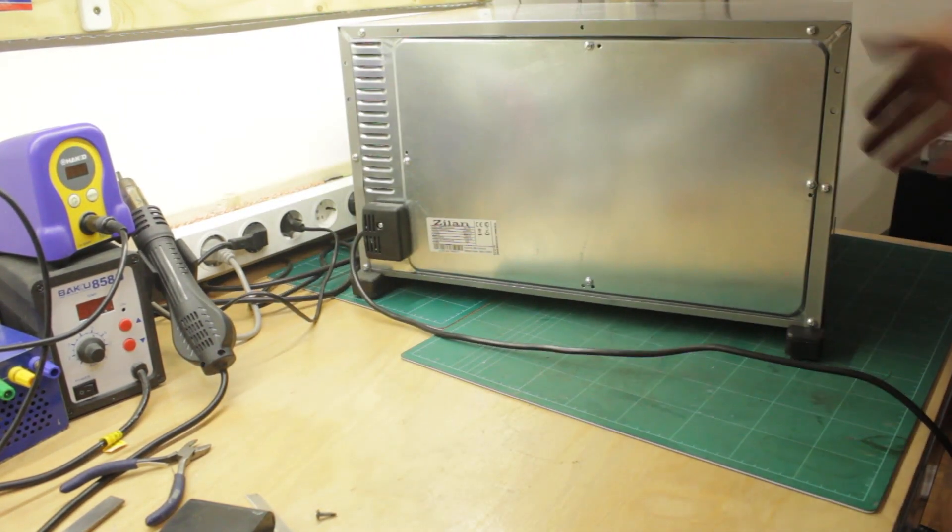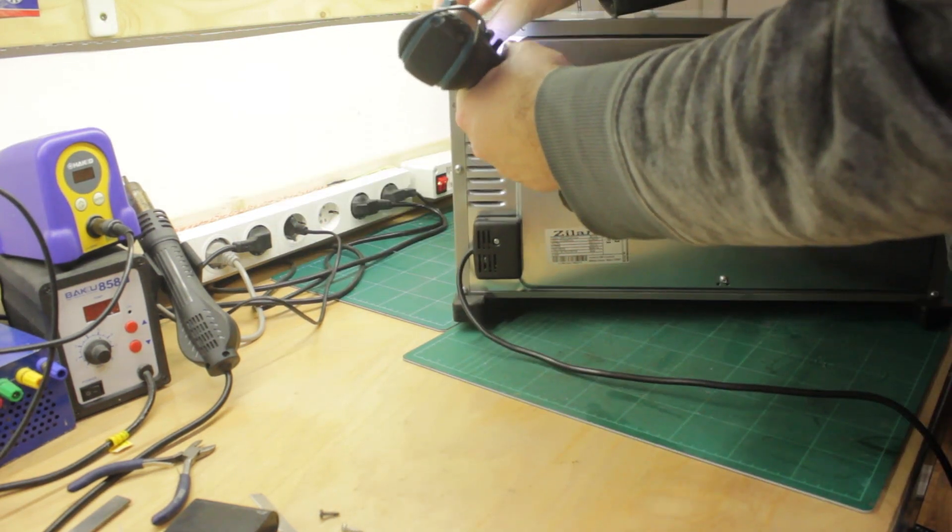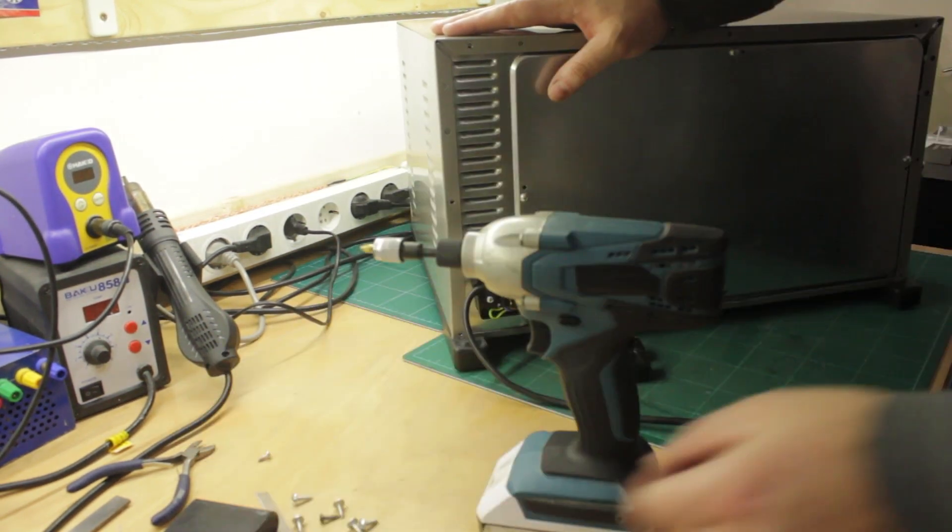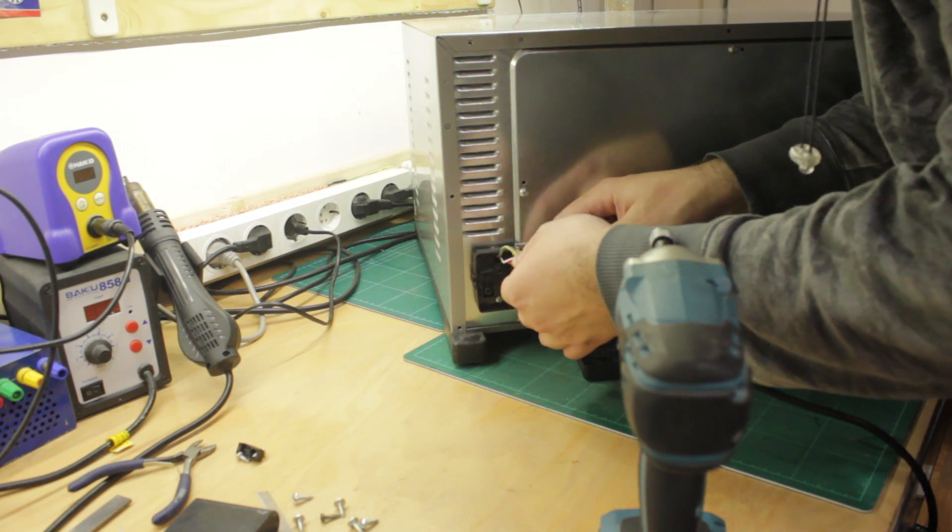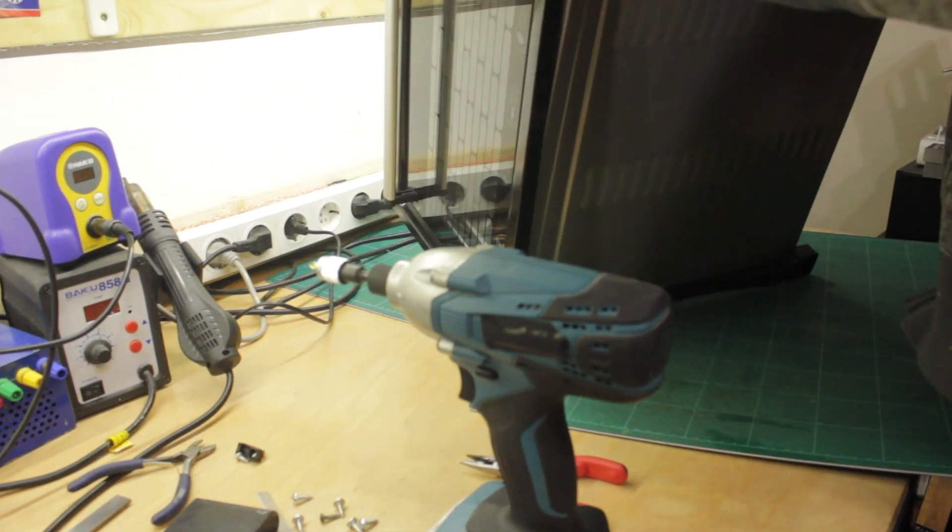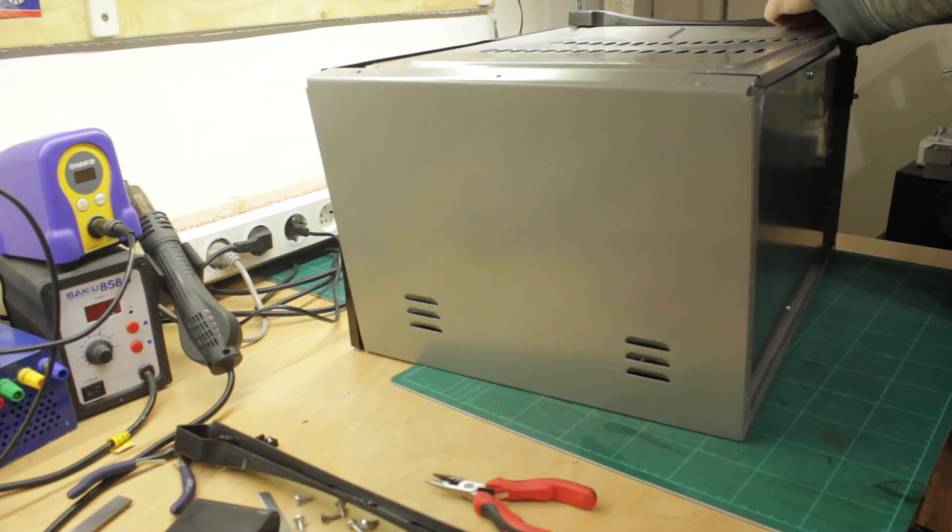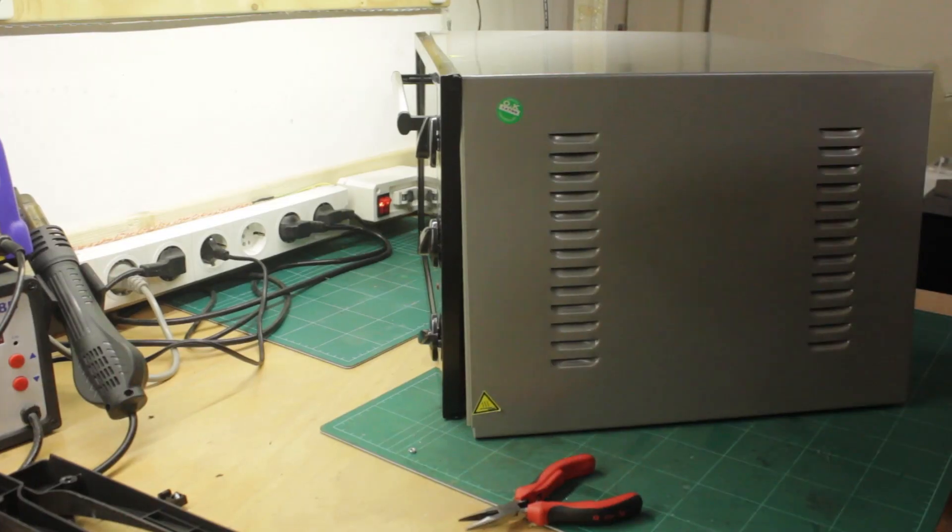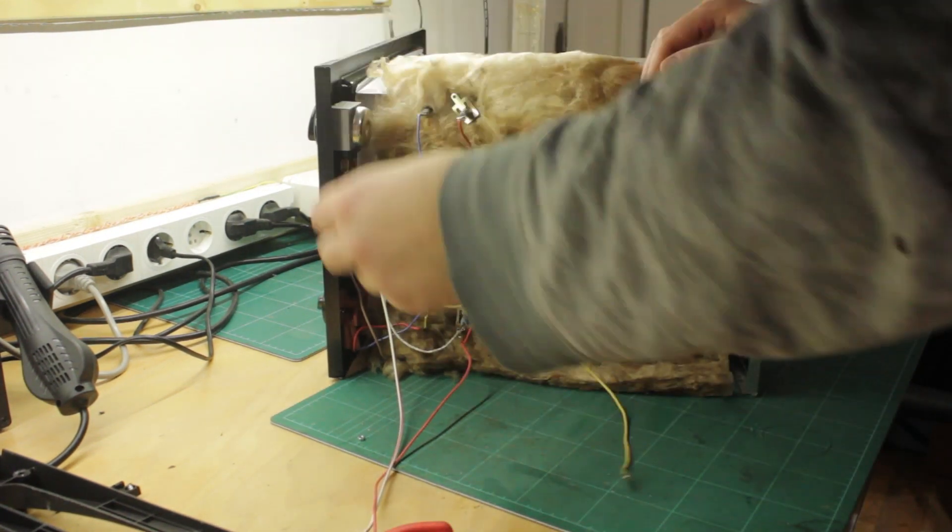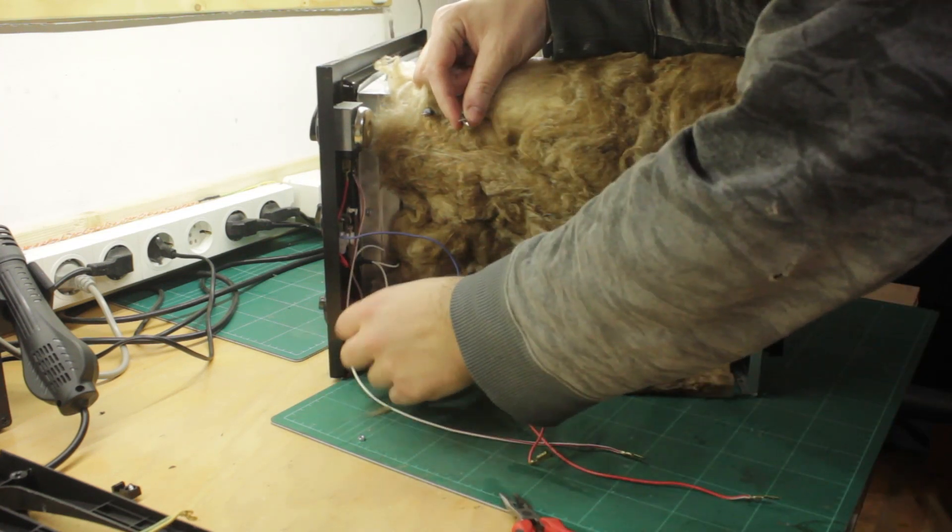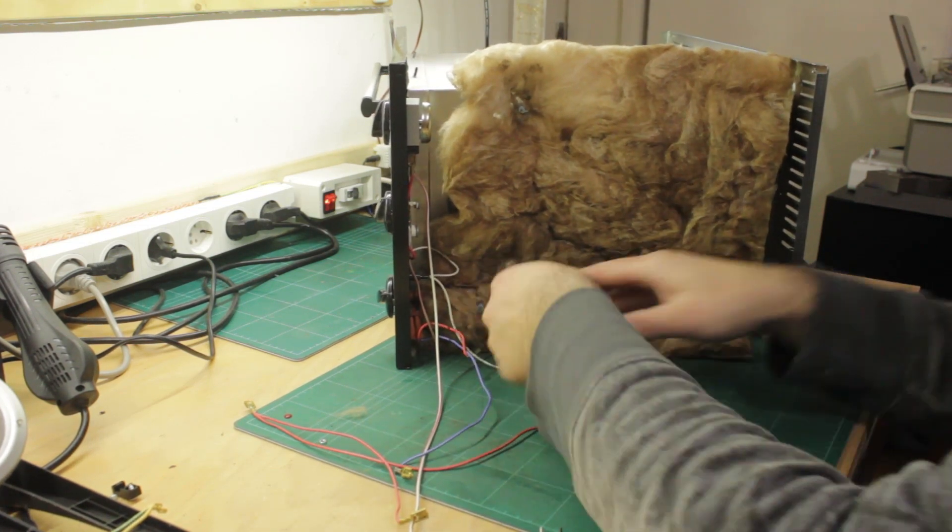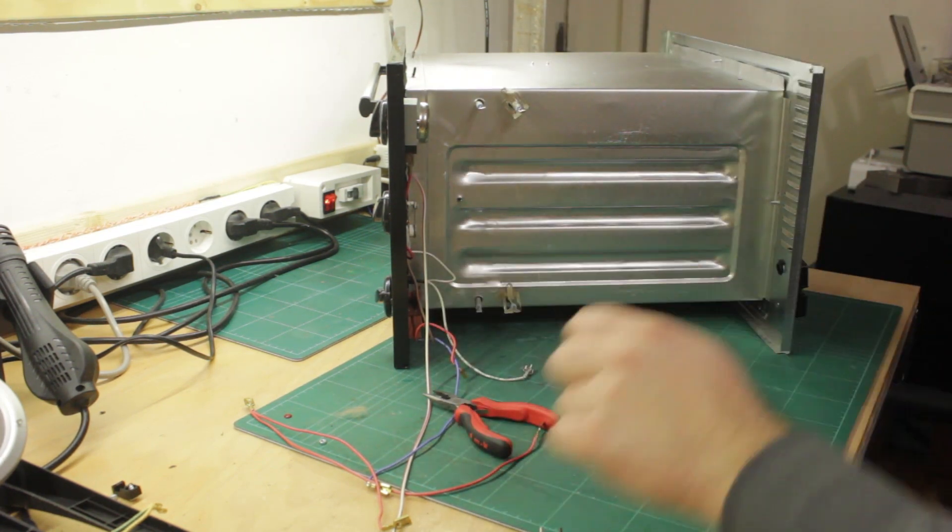I start by taking it apart. After removing the main cover, I noted all the wiring and disconnected it. I also removed the heat insulation on this part of the oven.